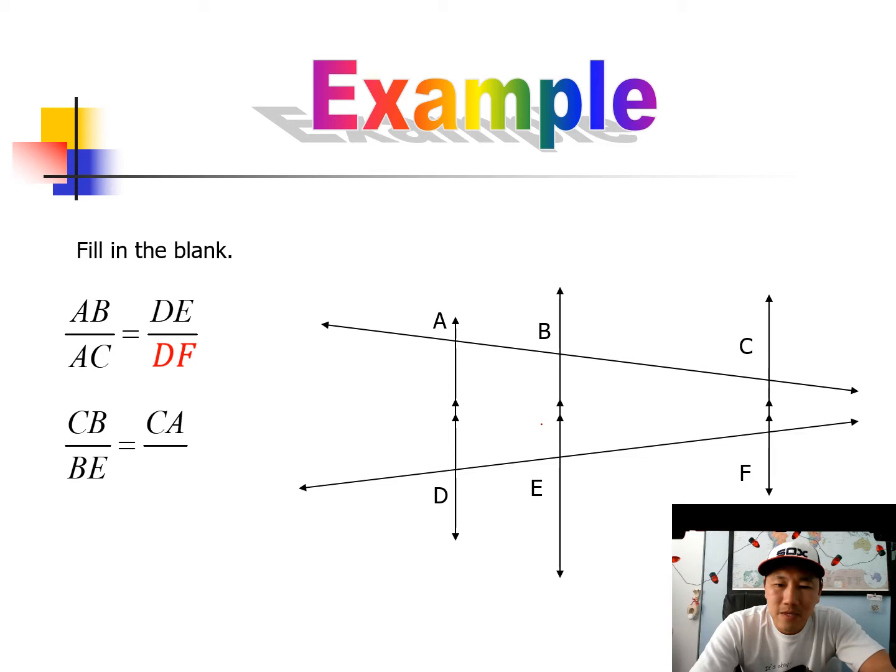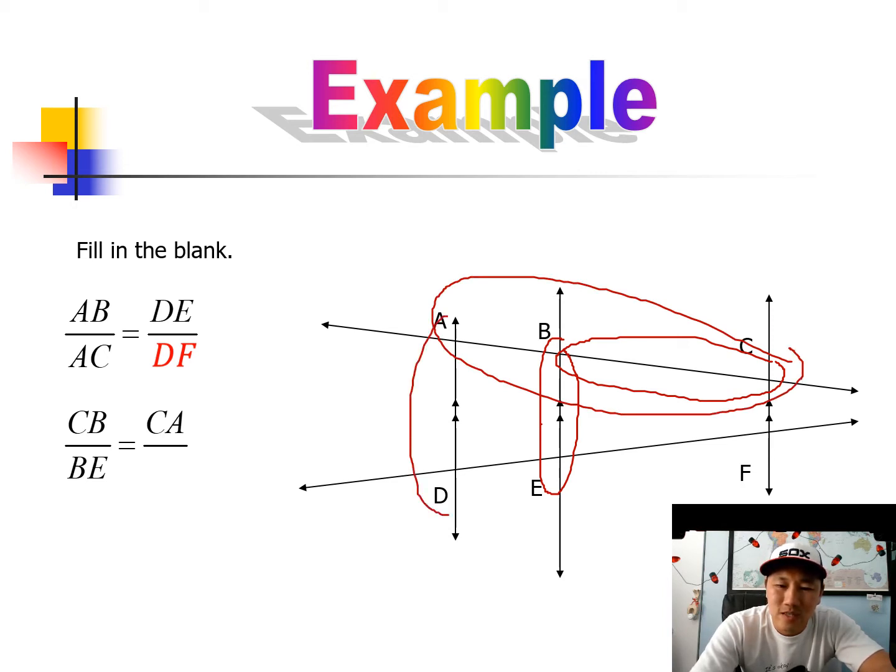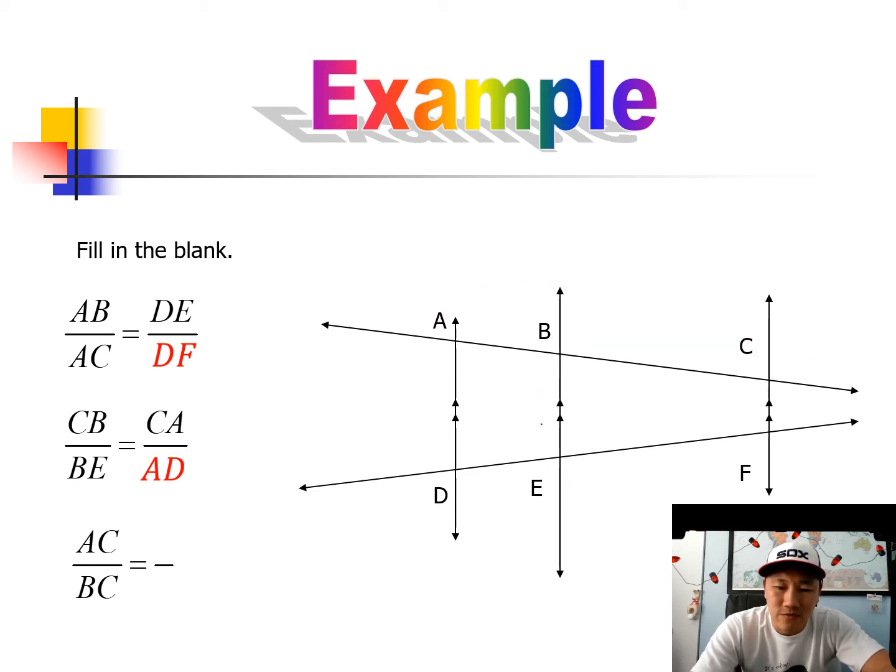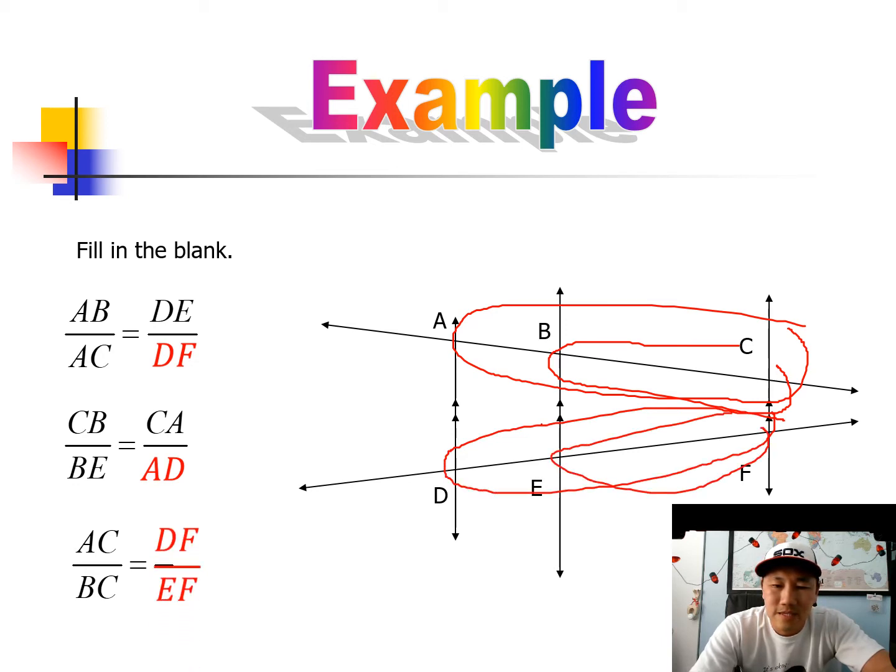So you kind of just visualize what is happening. CB, this little piece right here, over BE, this piece, is equal to CA, this long one, and it looks like we can use AD. So kind of just match up the sections. This last one doesn't even have certain options, but let's see if we can figure it out using the patterns. AC, this long one, over BC, this short one. Then we can use, actually there's a few choices, but how about this long one and this short one, DF and EF. So just matching up the sections that are proportional.